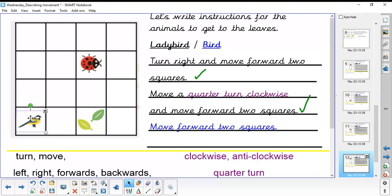Okay, so if the bird was going to move this time, we'd say move forward two squares. Because the direction that the bird is looking is this direction, and it moves forwards. Excellent. Well done.